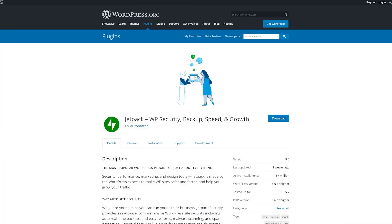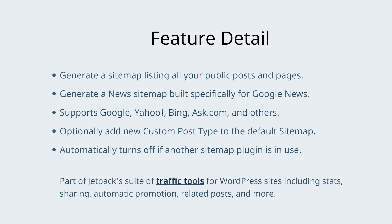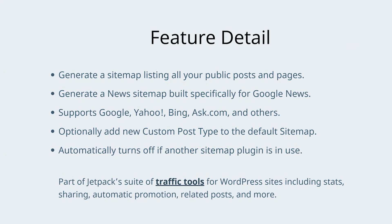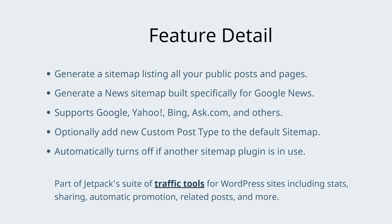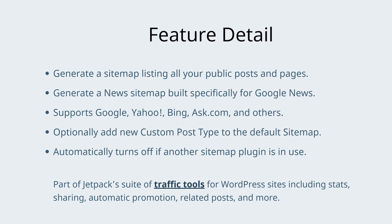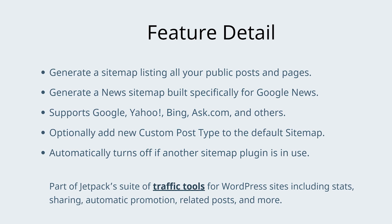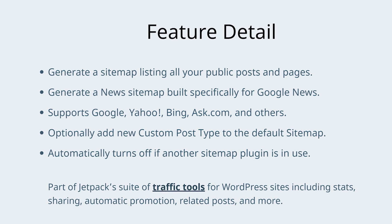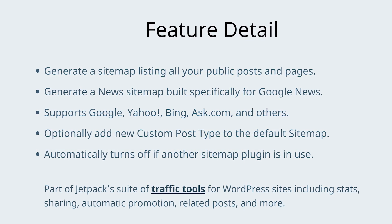Number five, Jetpack. By the creators of WordPress, the free version comes with a set of traffic tools that includes automatically generating a sitemap for your public posts and pages. You could enable custom post types, and it also generates a sitemap specifically for Google News. If there is another sitemap plugin in use, this feature is automatically disabled.